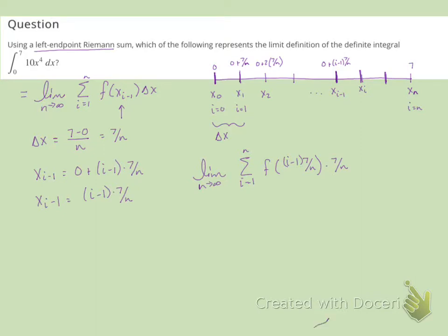Well, if we put this i minus 1 times 7 over n into the function, which is 10x to the fourth, then we will have the limit as n approaches infinity of the sum from i equal 1 to n of 10 times this i minus 1 times 7 over n to the fourth times 7 over n.